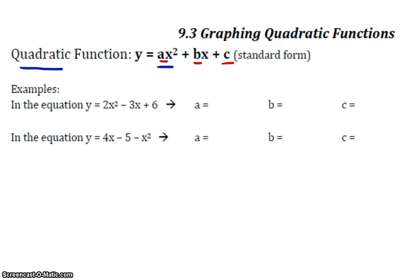So what I'd like you to do now is, in the first example, y equals 2x squared minus 3x plus 6, figure out what a, b, and c are.